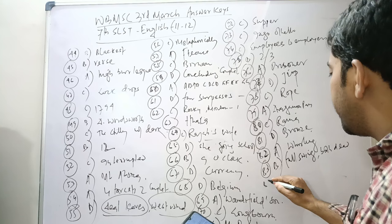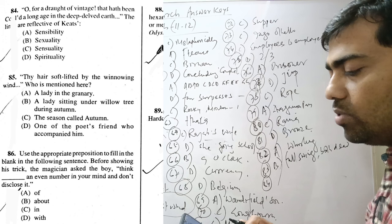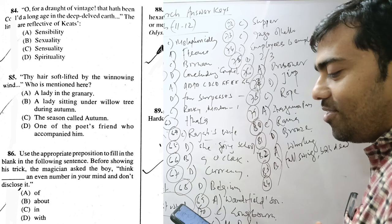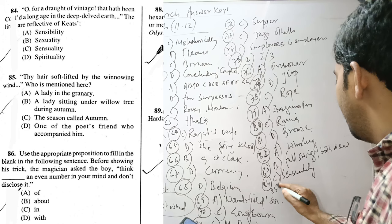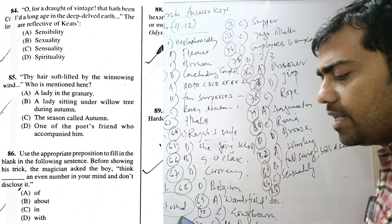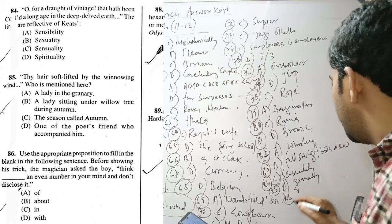Question 84. O for a draught of vintage that had been cooled long as the deep delved earth. The reflected Keats is known for its sensuality, for its sensual making, for its sensuousness. So, it is sensuality. Keats is known all about for its sensuousness. Thy hair soft-lifted by the winnowing wind, who is mentioned here? The lady in the granary.